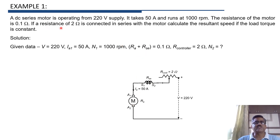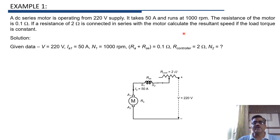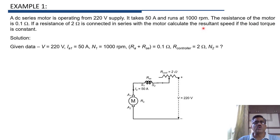If a resistance of 2 ohm, that is R_controller, is connected in series with the motor, we need to calculate the resultant speed N2 when R_controller equals 2 ohm. The load torque is constant in both cases, meaning TA1 equals TA2.